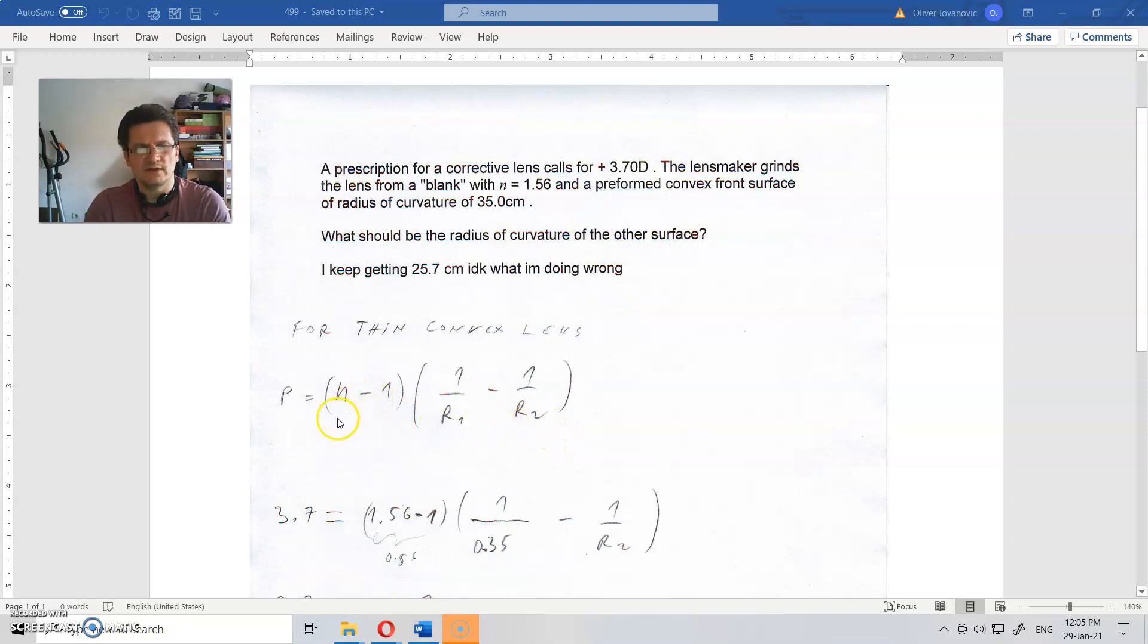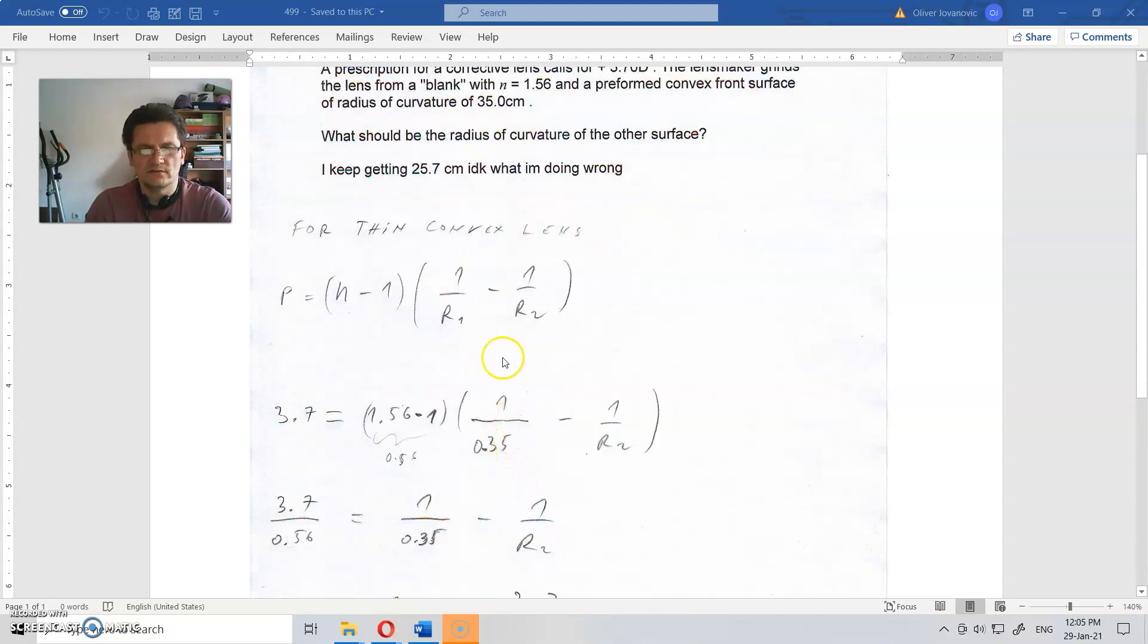So this is 3.7 = (1.56 - 1)(1/0.35 - 1/r2).